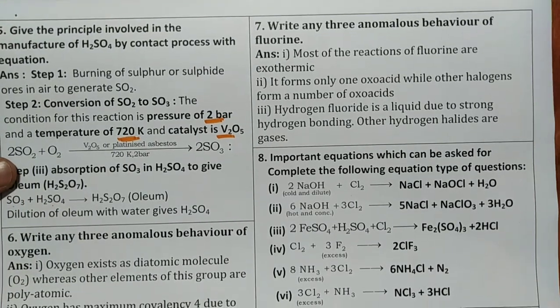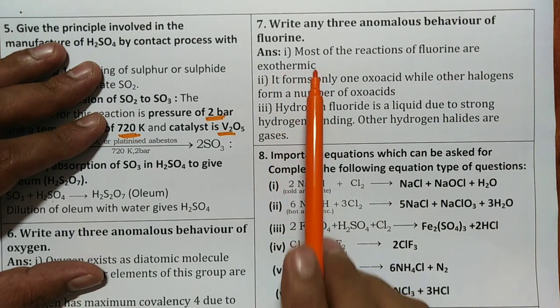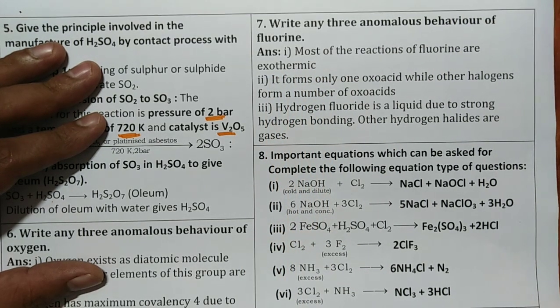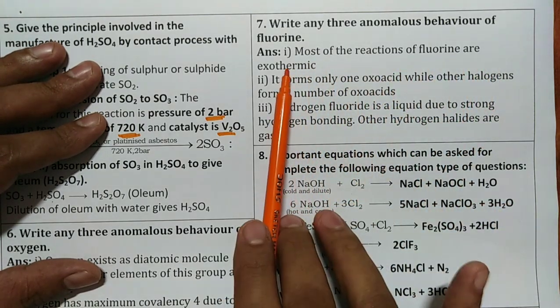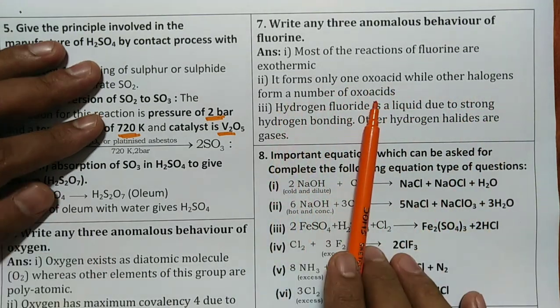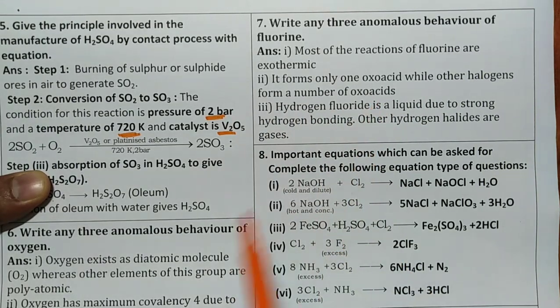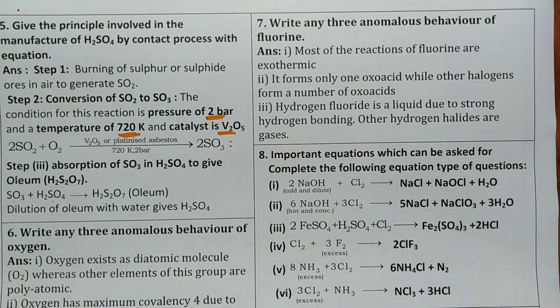Write three anomalous behavior of fluorine. Similarly here most of the reactions of fluorine are exothermic. It forms only one oxoacid while other halogens can form number of oxoacids. So hydrogen fluoride is liquid due to strong hydrogen bonding. Others are gases.